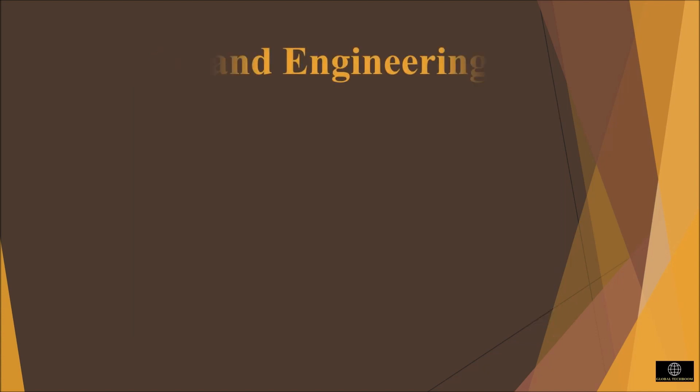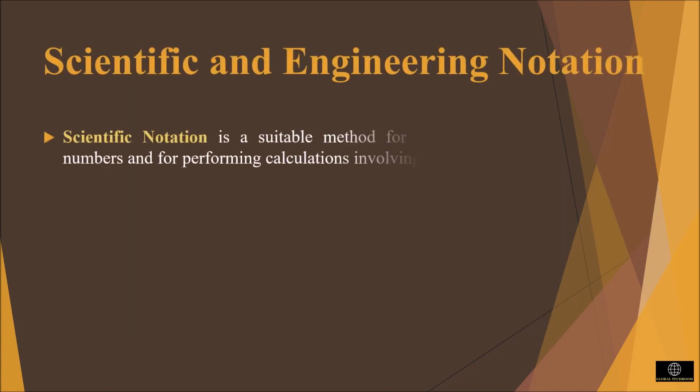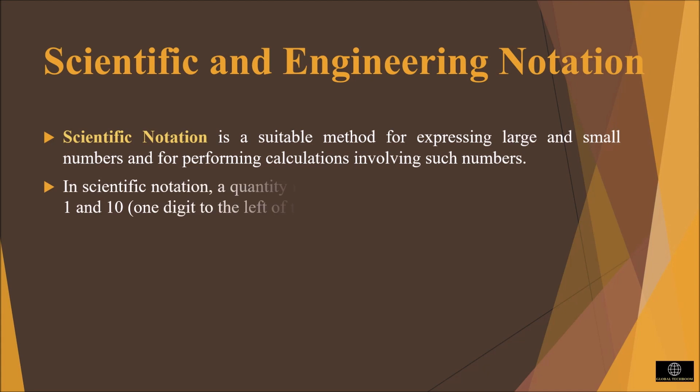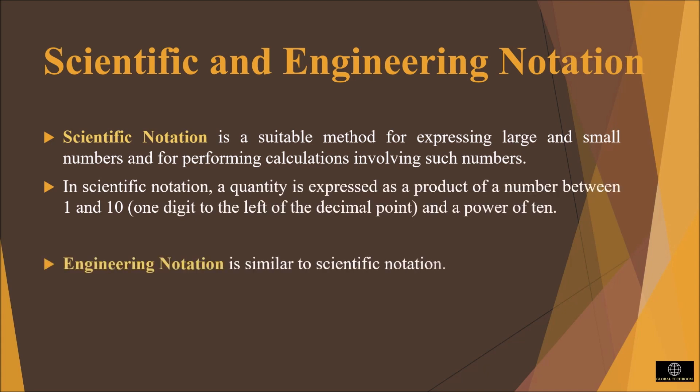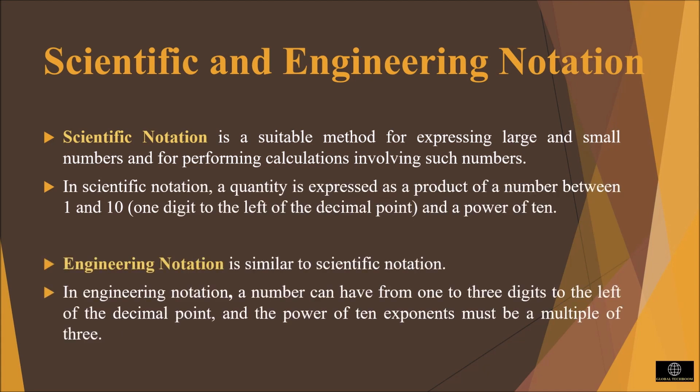In the electrical and electronic areas, we will come across both very small and very large quantities. Scientific notation is a suitable method for expressing large and small numbers. In scientific notation, the quantity is expressed as a product of a number between 1 and 10 and a power of 10, with one digit to the left of the decimal point.